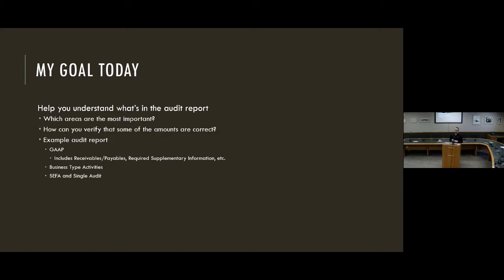How can you verify that some of the amounts are even correct? For example, in your note disclosures, there are areas where you can look at the capital assets notes and verify that amount against the net position. There are areas where a late-minute adjustment to, say, the capital assets note doesn't get changed on the statement of net position. Unfortunately, inaccurate or slightly inaccurate audit reports do get out sometimes.